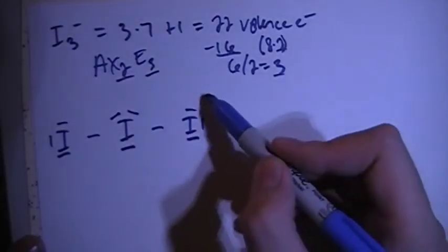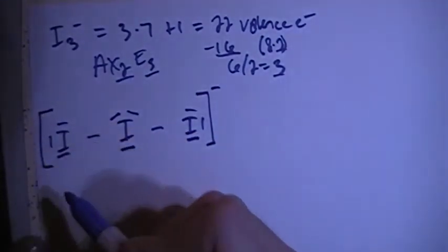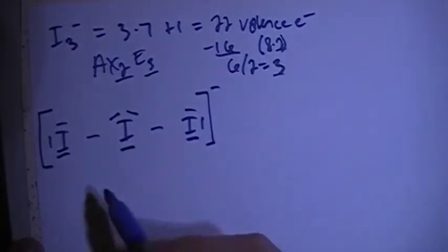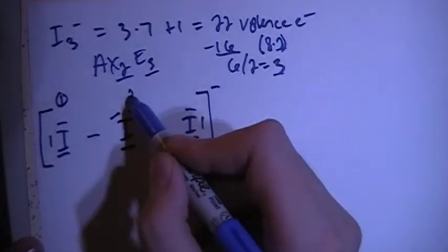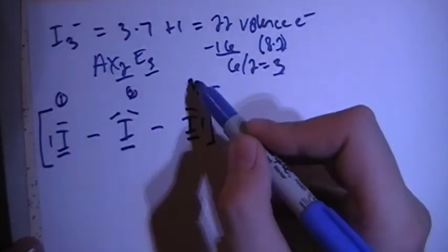Before we do that, let's make sure we add in our brackets so that this is an ion. Let's call this iodine here iodine one, this is iodine two, and this right here is iodine three.